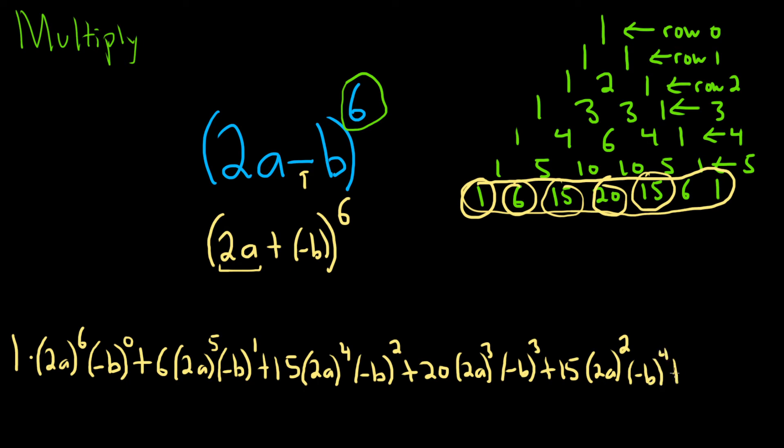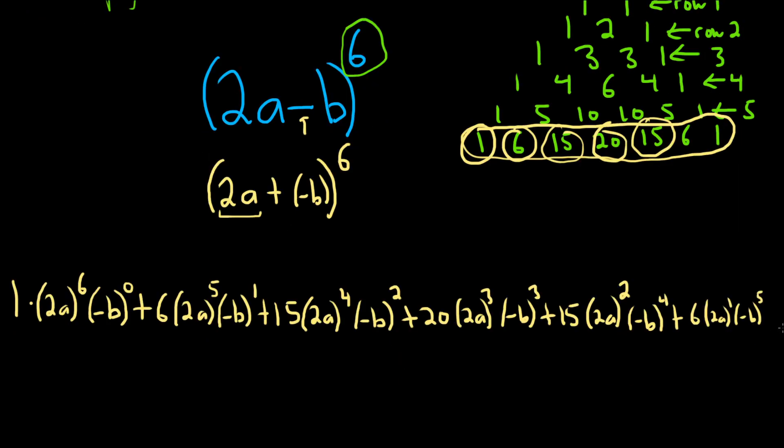Running out of room. Plus 6, 2a to the 1, negative b to the 5. I'm going to have to come down a line here. Plus, that was the 6. Now we're at the 1. Plus 1, 2a to the 0, negative b to the 6.